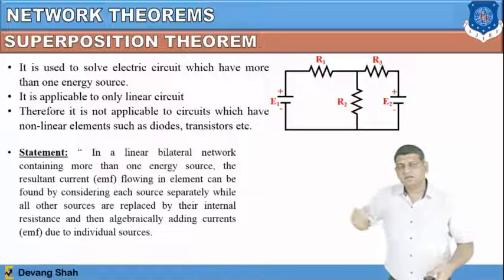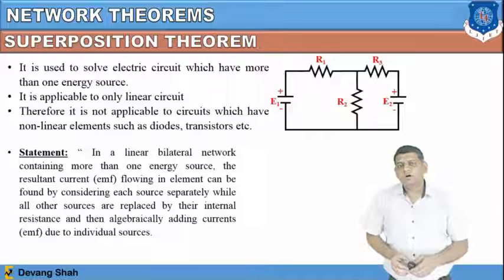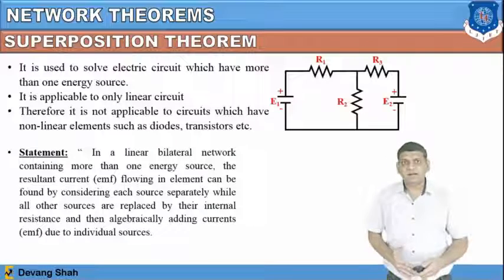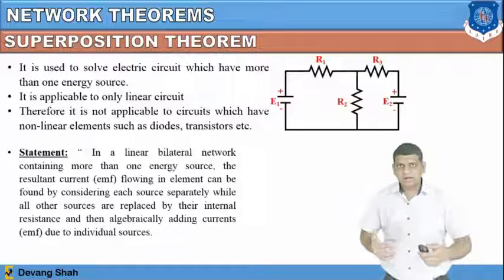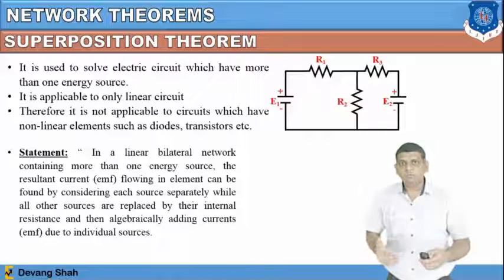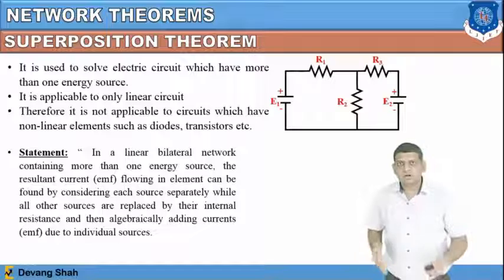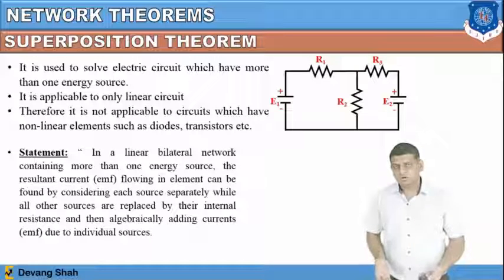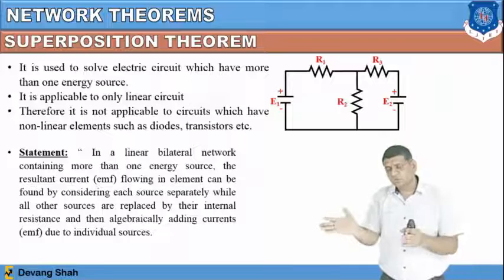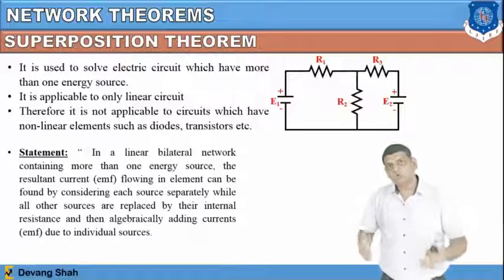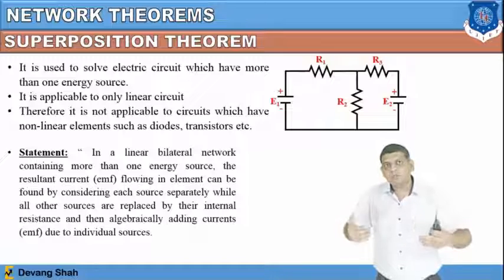In this example of the Superposition theorem, two voltage sources are available with three resistances connected in series and parallel combinations. The statement is: in a linear bilateral network containing more than one energy source, the resultant current or EMF in any branch can be found by considering each source separately while all other sources are replaced by their internal resistance, then algebraically adding the currents or EMFs due to the individual sources.